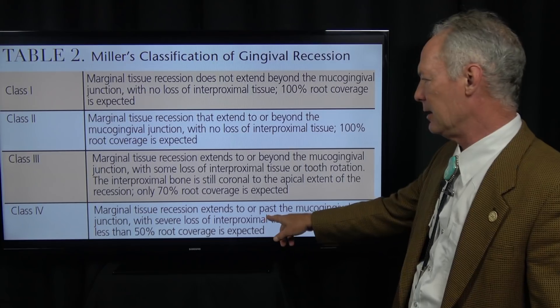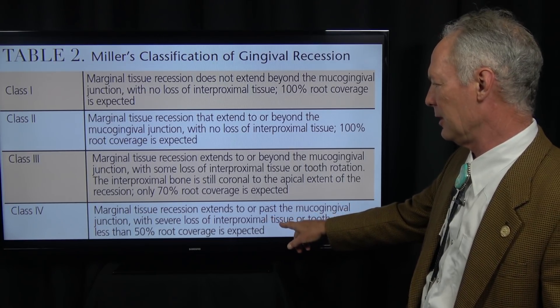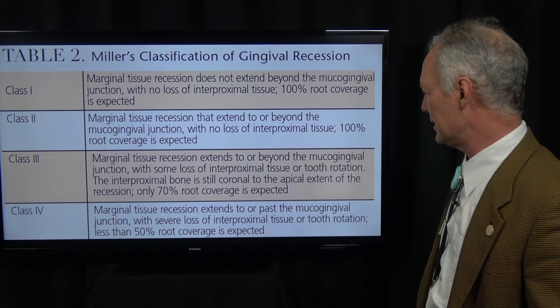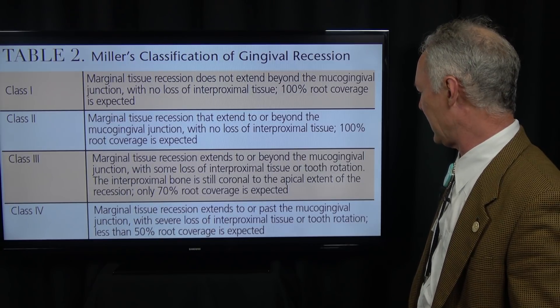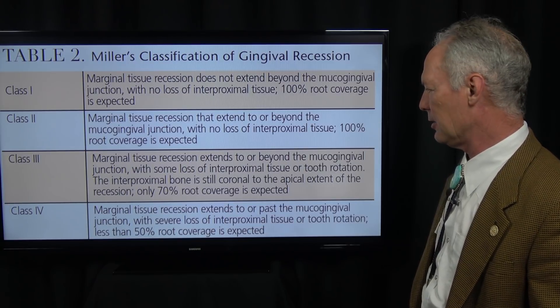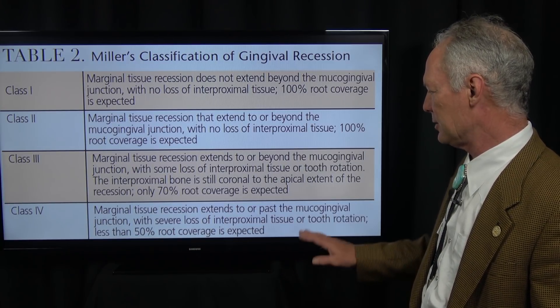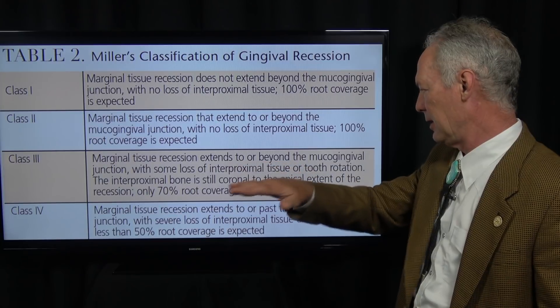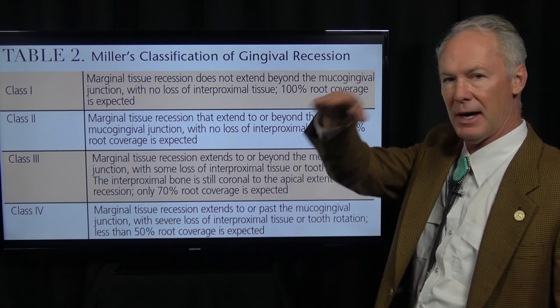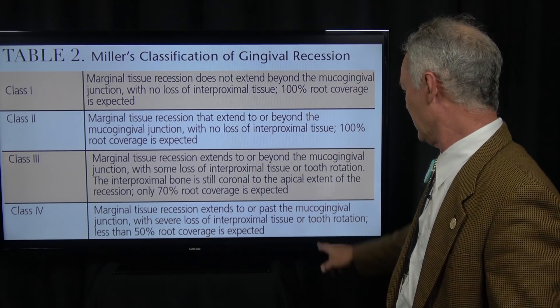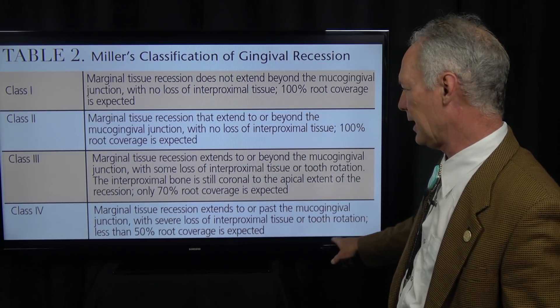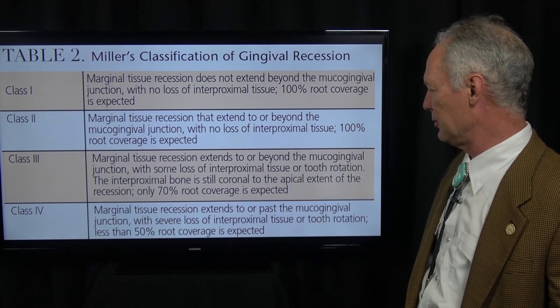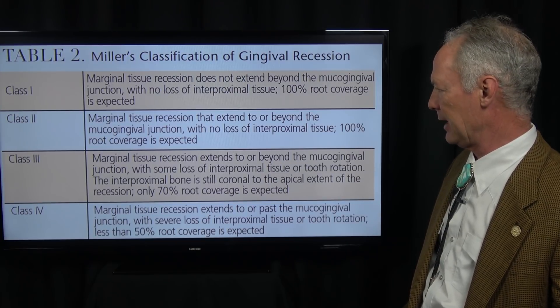Class 4 is marginal tissue recession that extends to or past the mucogingival junction with severe loss of interproximal tissue — the gingival papilla have lost some of their height, or there is tooth rotation — and less than 50% root coverage is expected.